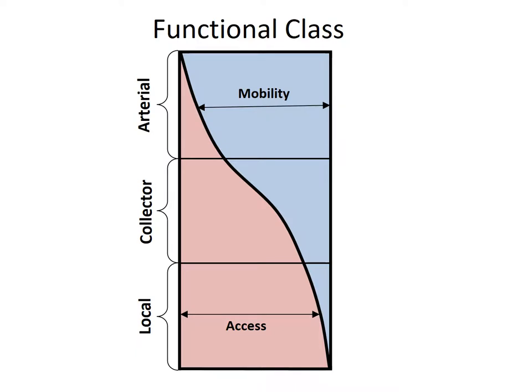Local streets provide the highest levels of access. The transition between mobility and access are collector roads. These roads provide the transition between local roads and arterials.